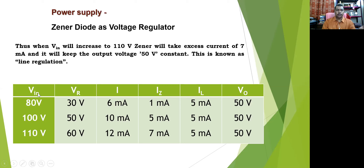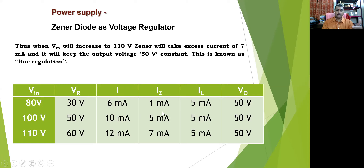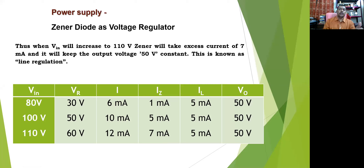As shown in the summary table: input voltage varies at 80 V, 100 V, and 110 V; voltage drop VR changes at 30 V, 50 V, and 60 V; Zener current IZ increases from 1 mA, 5 mA, to 7 mA respectively; while IL and VO remain constant. This is how the Zener diode keeps the output voltage constant during line regulation.